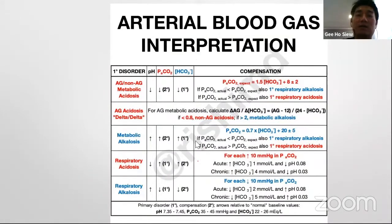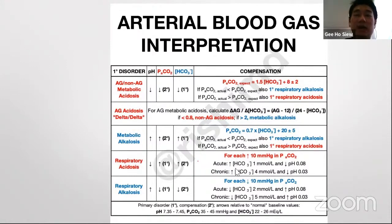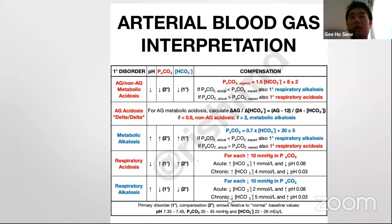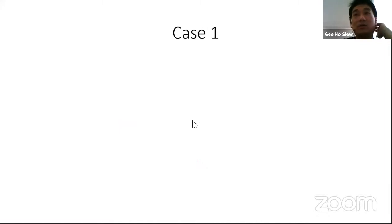In summary: for metabolic acidosis, use Winter's formula to check expected PaCO2; for metabolic alkalosis, also use a formula to check expected CO2; for respiratory acidosis — whether acute or chronic — there are corresponding bicarbonate changes; and for respiratory alkalosis in acute versus chronic conditions, bicarbonate drops by 2 or 5 respectively. Now I'll share some cases from our center. These are our real patients — try to interpret what type of condition each patient has.